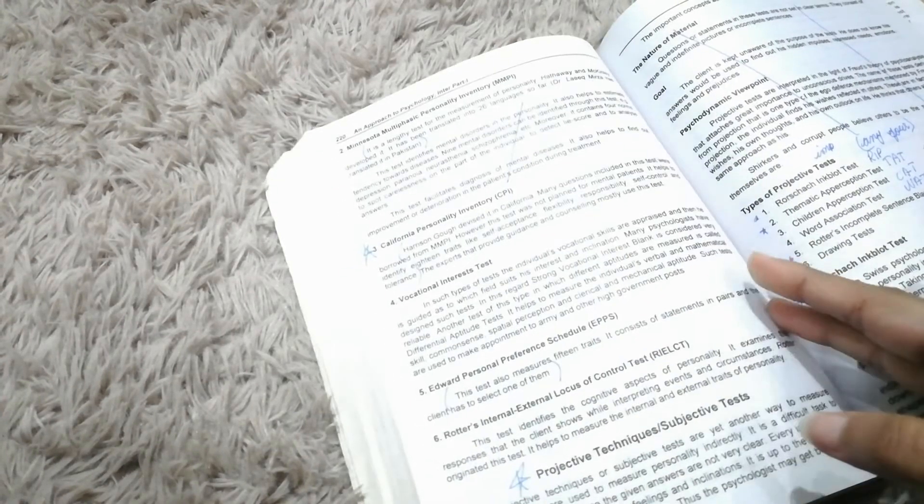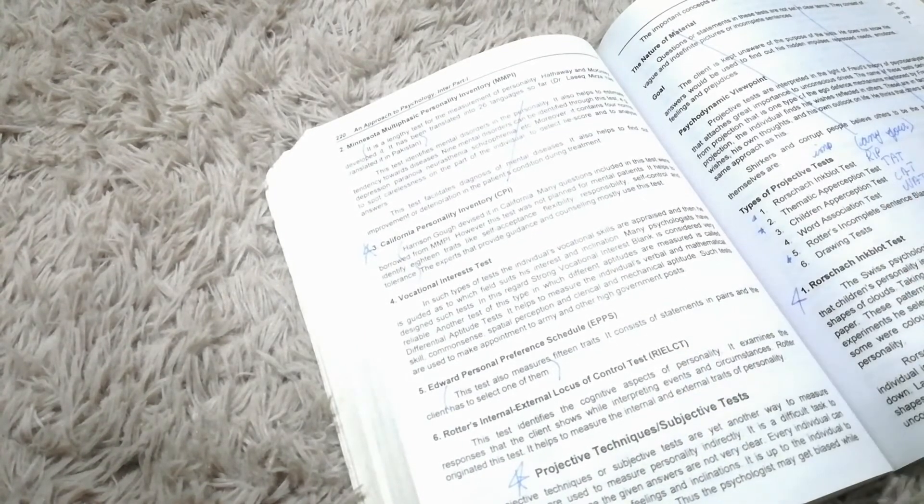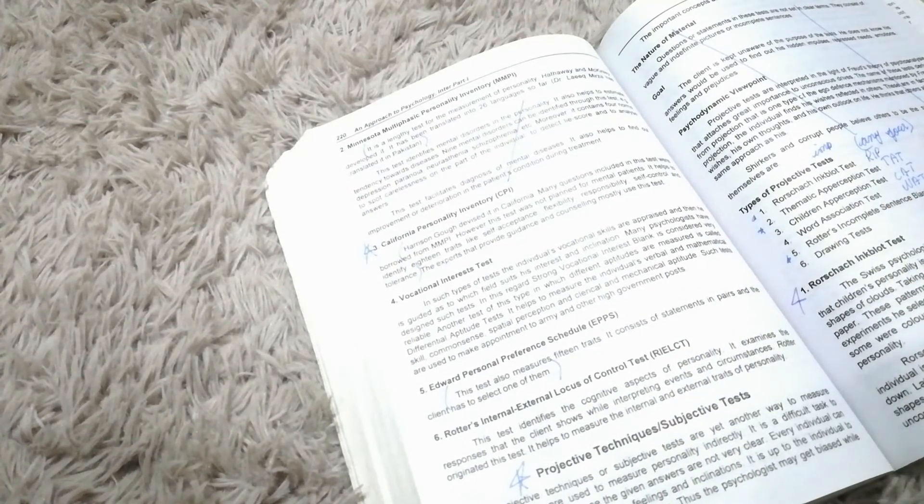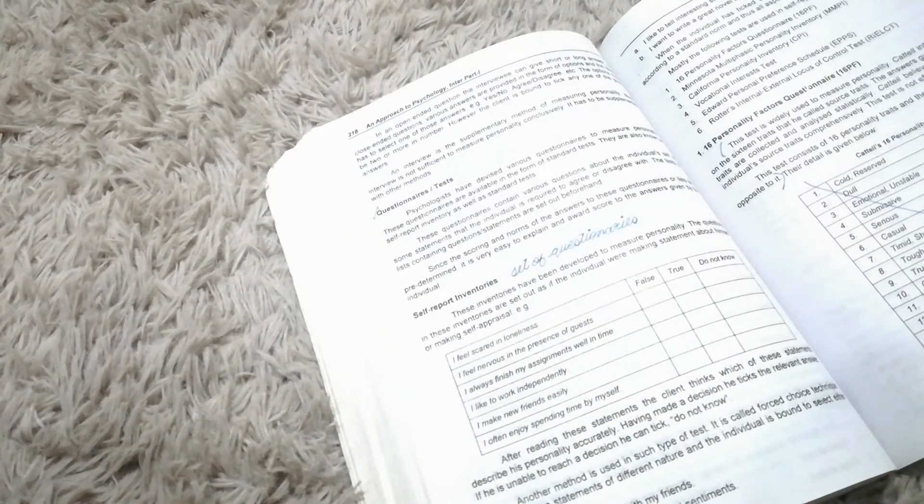Minnesota Multiphasic Personality Inventory - MMPI. This basically is what. California Personality Inventory - CPI. This is what I can tell you. Different methods, test, etc.